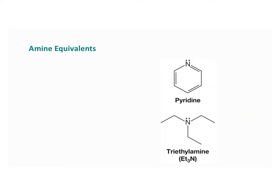Something really important for aminolysis reactions is the number of equivalents of the amine required. Two equivalents of amine are required. The first equivalent is used in step one, where the amine acts as a nucleophile and attacks the carbonyl carbon of the acid chloride. The second equivalent is used in step two, where it acts as a base to deprotonate the positively charged nitrogen from the original molecule.